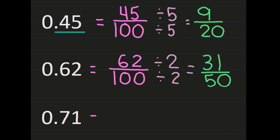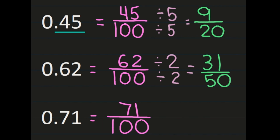The final example in this group is 71 hundredths. The 1 is in the hundredths place, so the denominator is 100 and 71 is the numerator — again, just like it sounds. We check if we can simplify, but 71 and 100 don't share any common factors. So 71 hundredths is equal to 71 over 100.